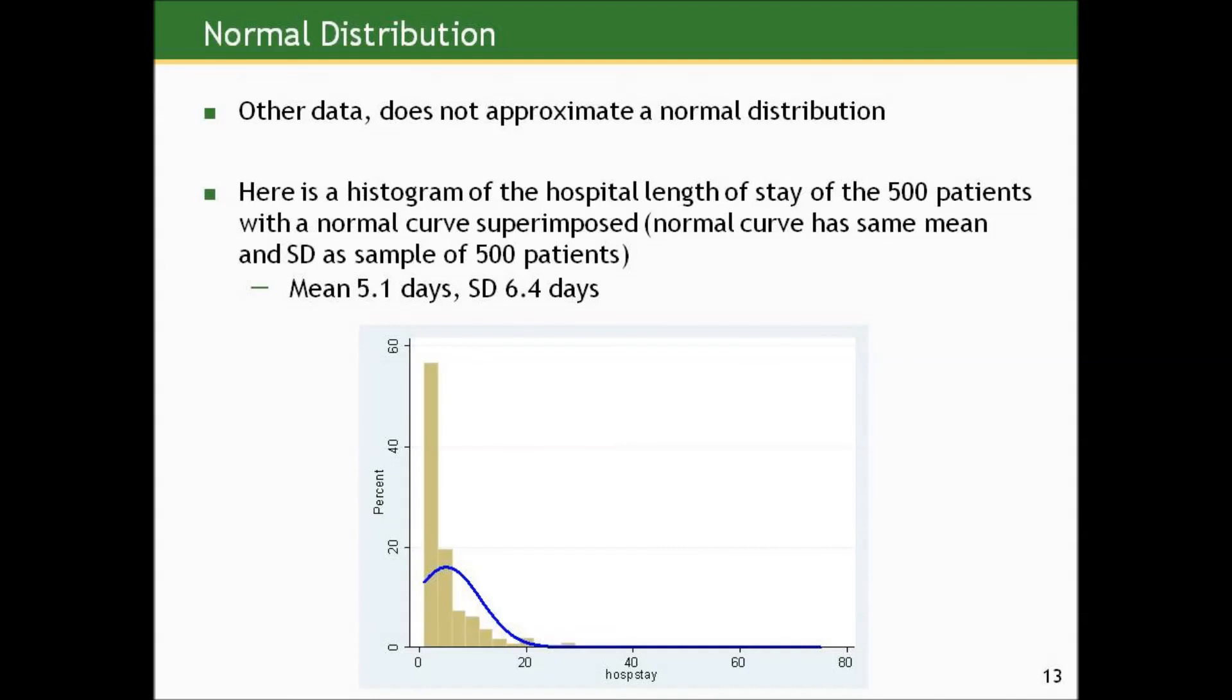Other data does not approximate a normal distribution. Here is a histogram of hospital length of stay data that we looked at before of a thousand patients with a normal curve superimposed. This normal curve has the same mean and standard deviation as the sample of a thousand patients—5.1 days and 6.4 days respectively. You can see that this data in the sample is not well approximated by a normal curve, which suggests that the distribution of length of stay values at the population level would also not be well approximated by a normal curve.